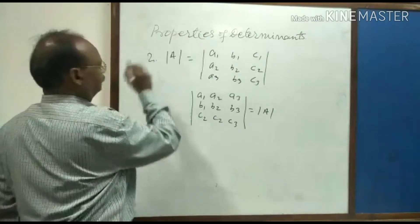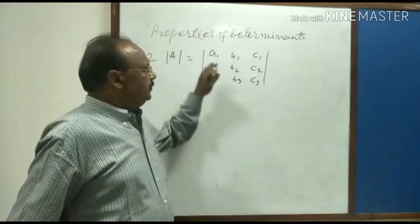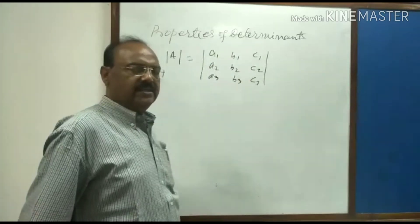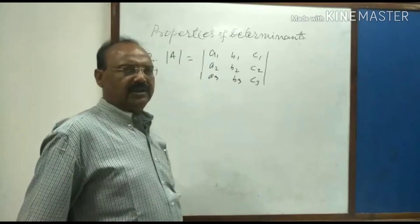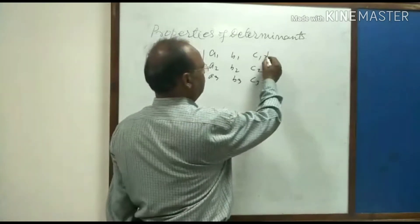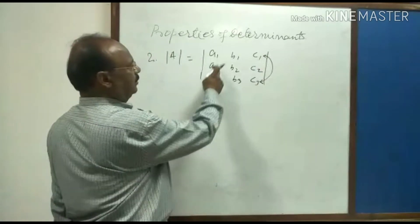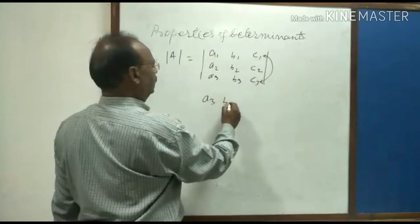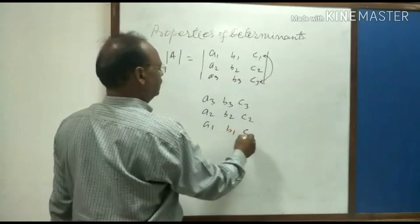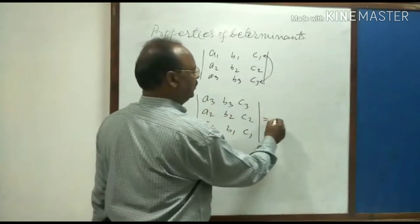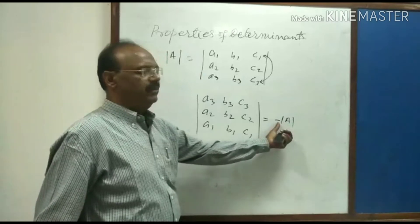Property number two: if all the elements of any two rows are interchanged with each other, then there will be no change in the absolute value of the determinant, but the sign of the value will be changed. For example, if we interchange the elements of the first row and third row, third row becomes first row — a3 b3 c3, a2 b2 c2, a1 b1 c1 — then this will be equal to minus of the original determinant. The absolute value remains the same but the sign changes.